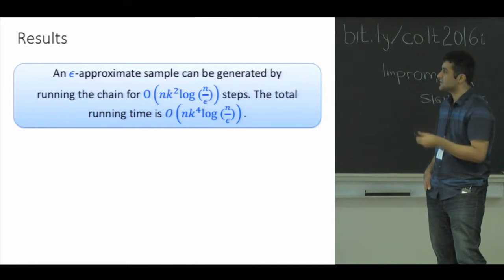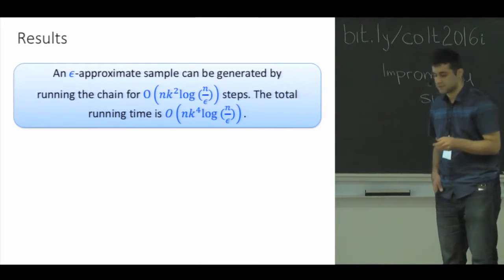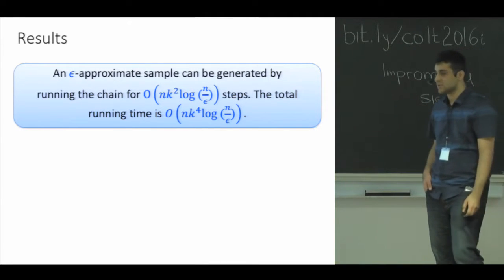Here is our result about this Markov chain. We prove an epsilon approximate sample can be generated from μ by running this chain for about n times k squared number of steps. The time each step of the chain takes is about k squared, so the total running time of the algorithm is n times k to the fourth times log n over epsilon.